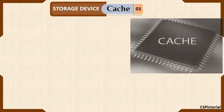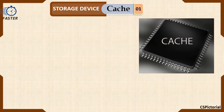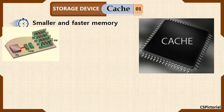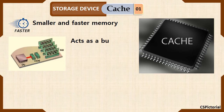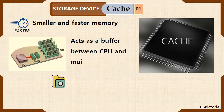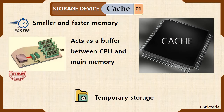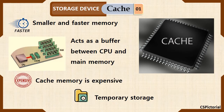The cache memory is a chip that resides on the motherboard. This is the fastest memory. It acts as a buffer between the CPU and the RAM. The cache memory holds only the data that the CPU is currently working with, and it is very expensive.